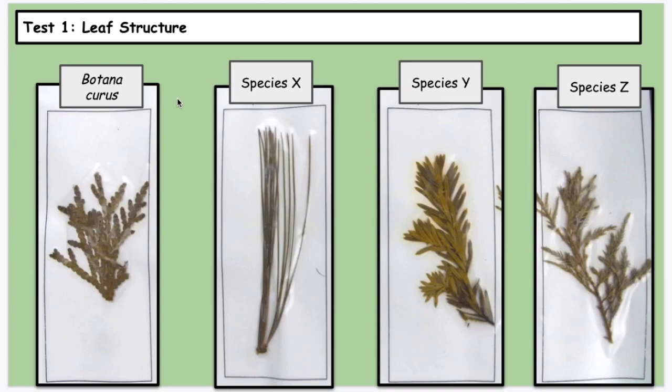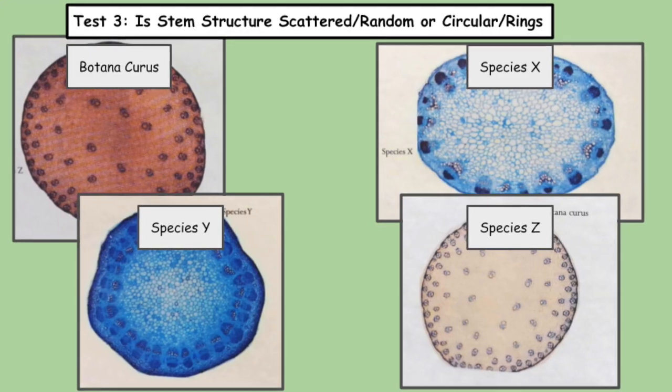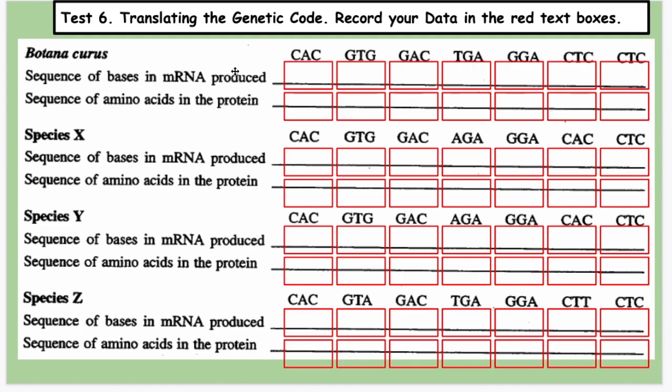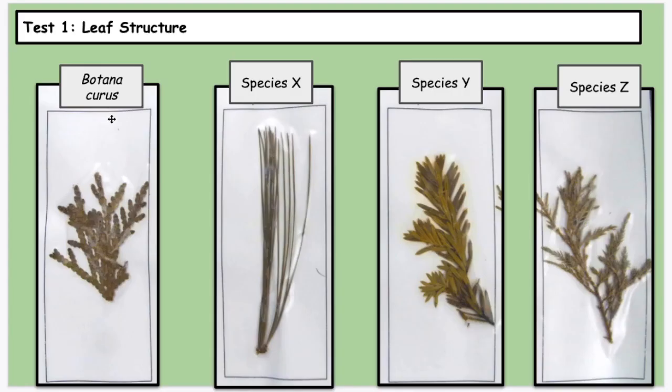This is the walkthrough for the Relationships and Biodiversity Lab for the Living Environment. In this lab, they give you a hypothetical plant called Botanicuris, or BC, which produces a medicine called Cural. It's your job to compare it to related species X, Y, and Z by doing a number of tests to see which of these three species is most closely related to Botanicuris, because maybe these species are also going to produce this hypothetical medicine, Cural.